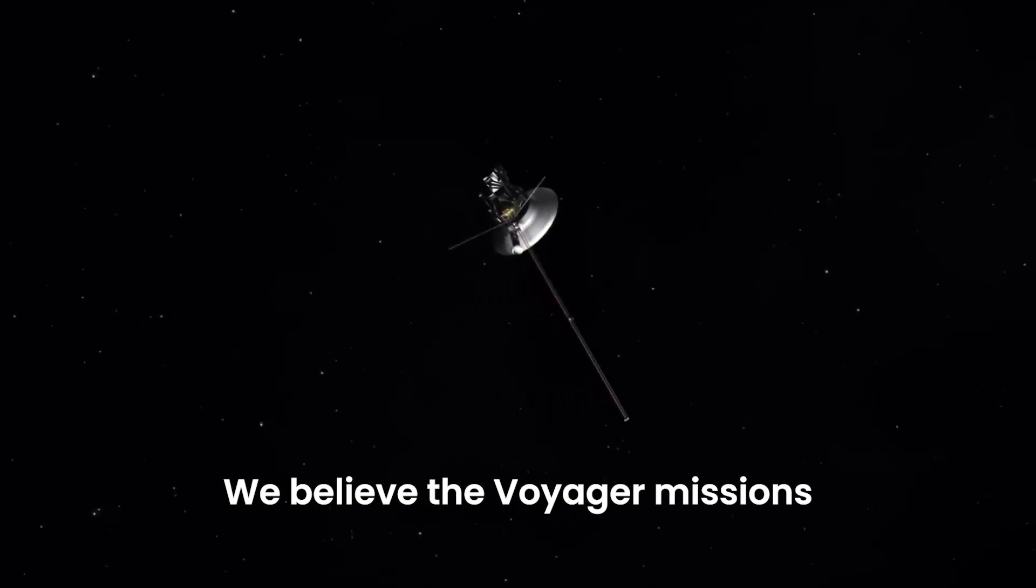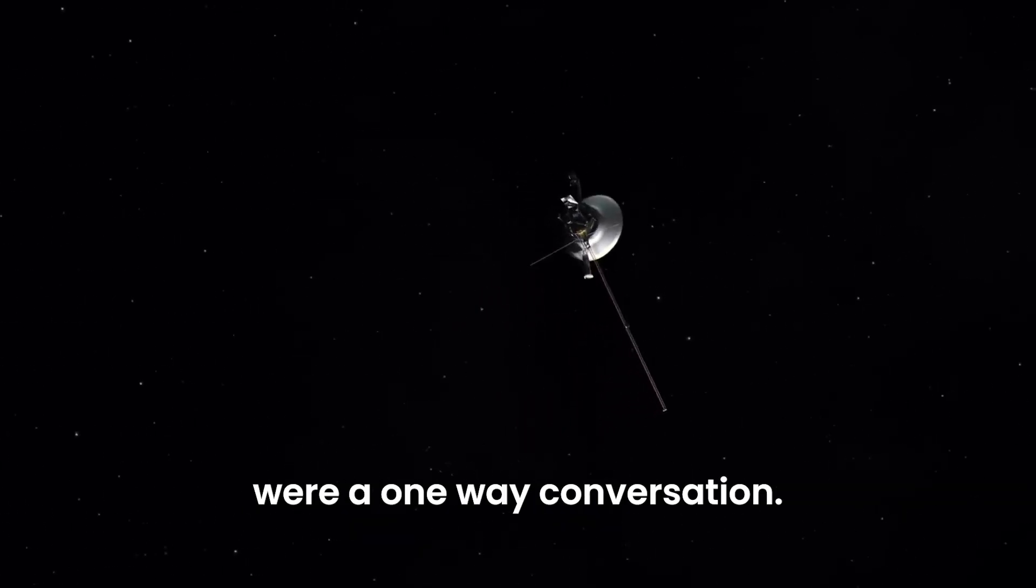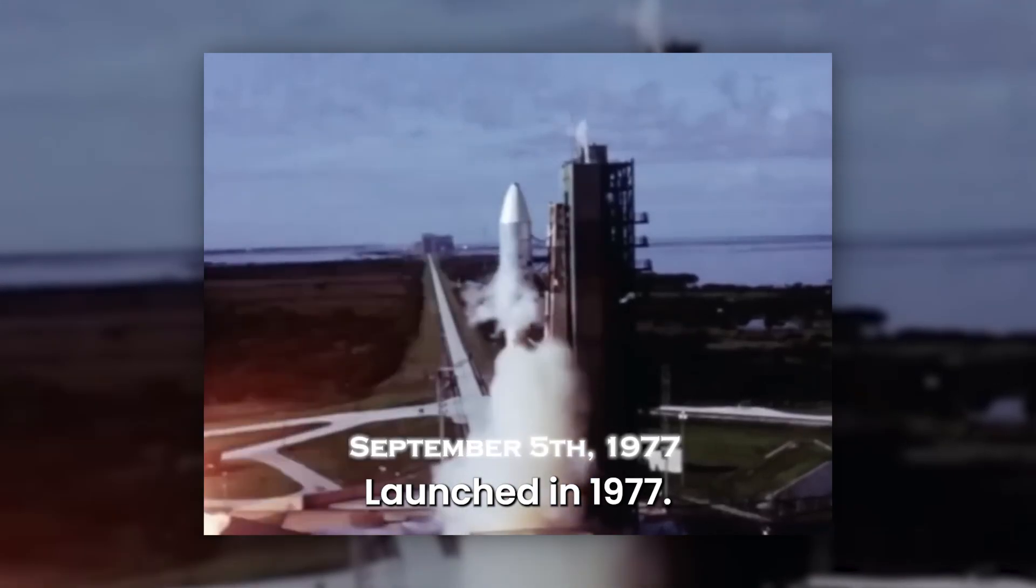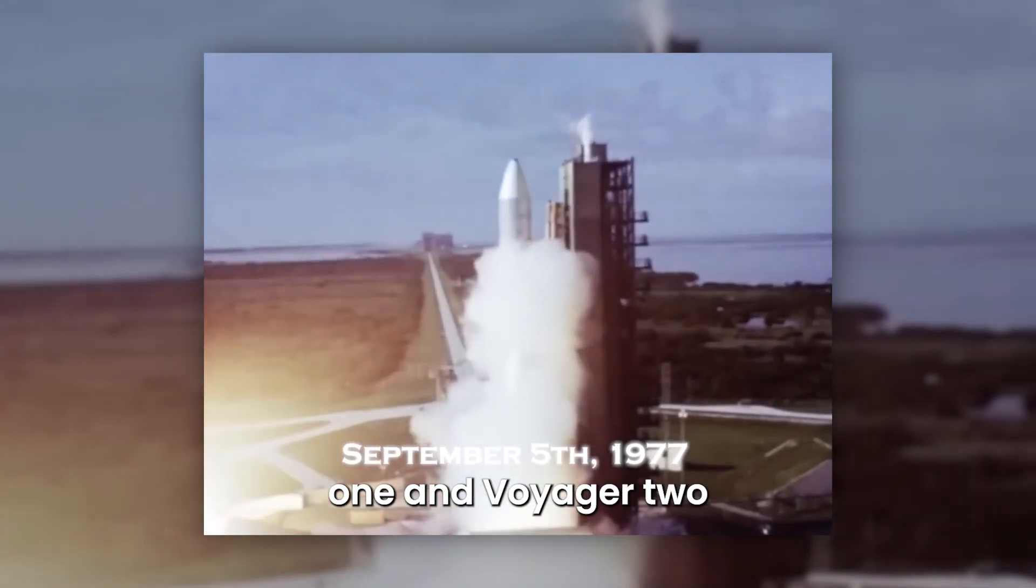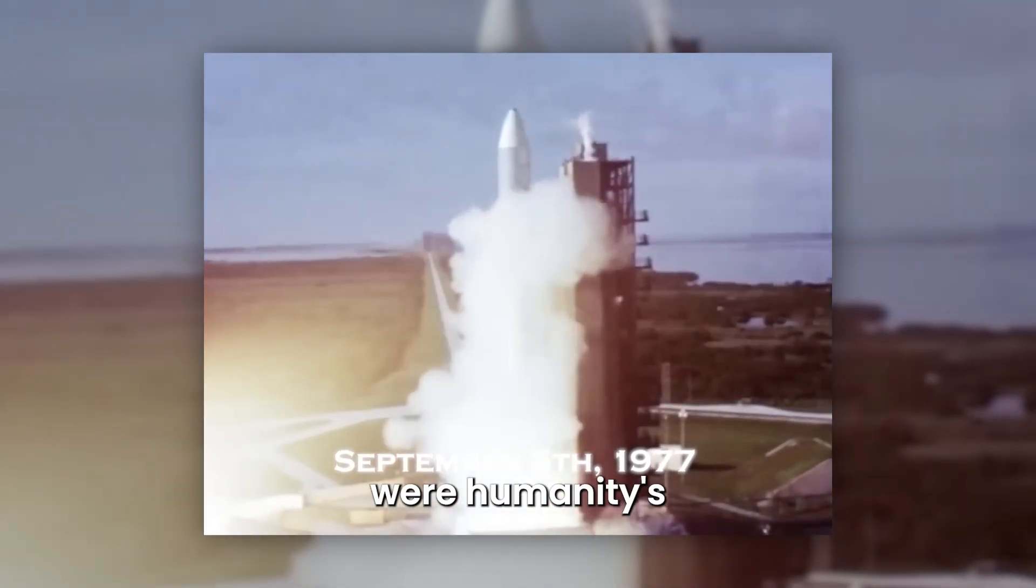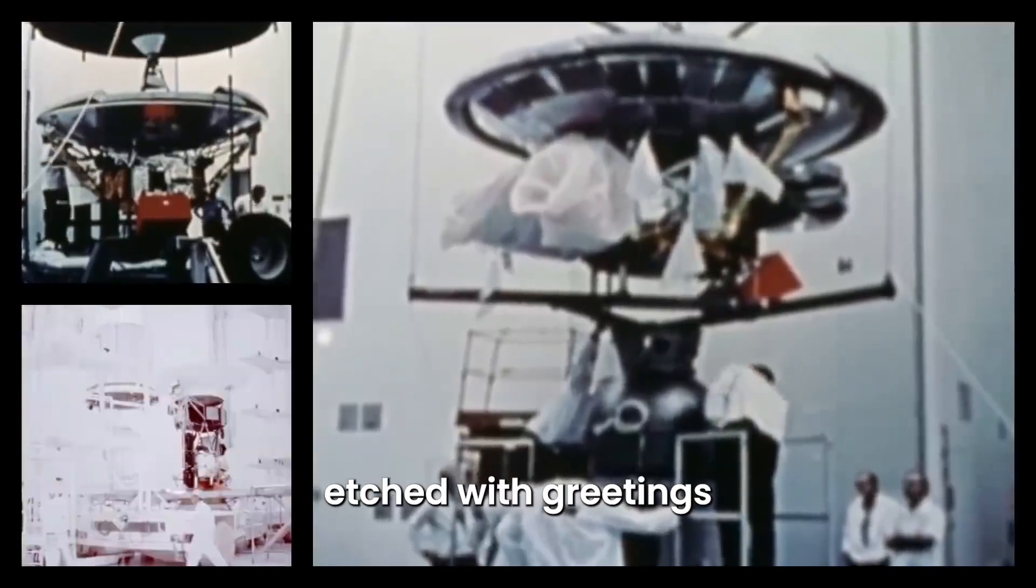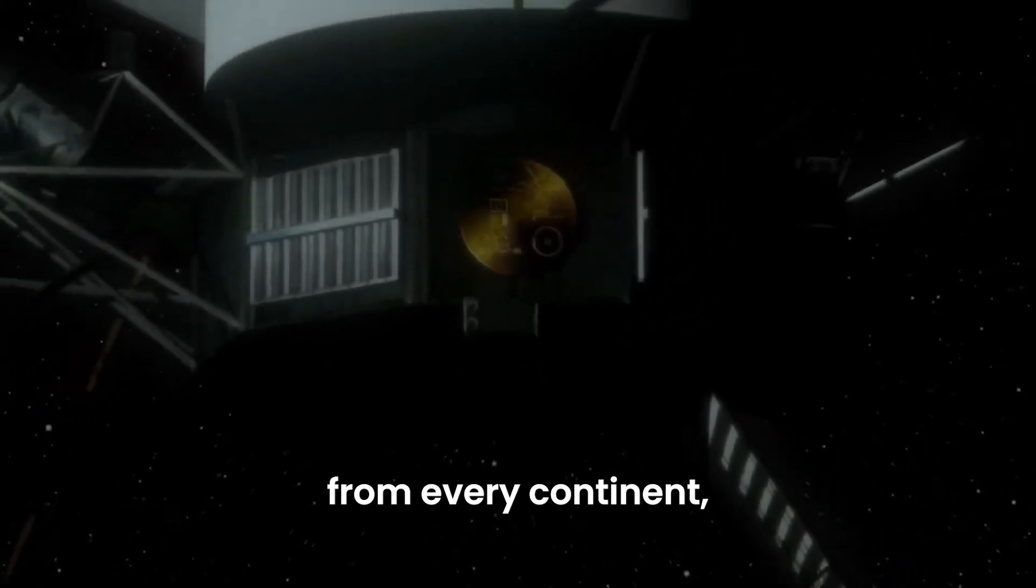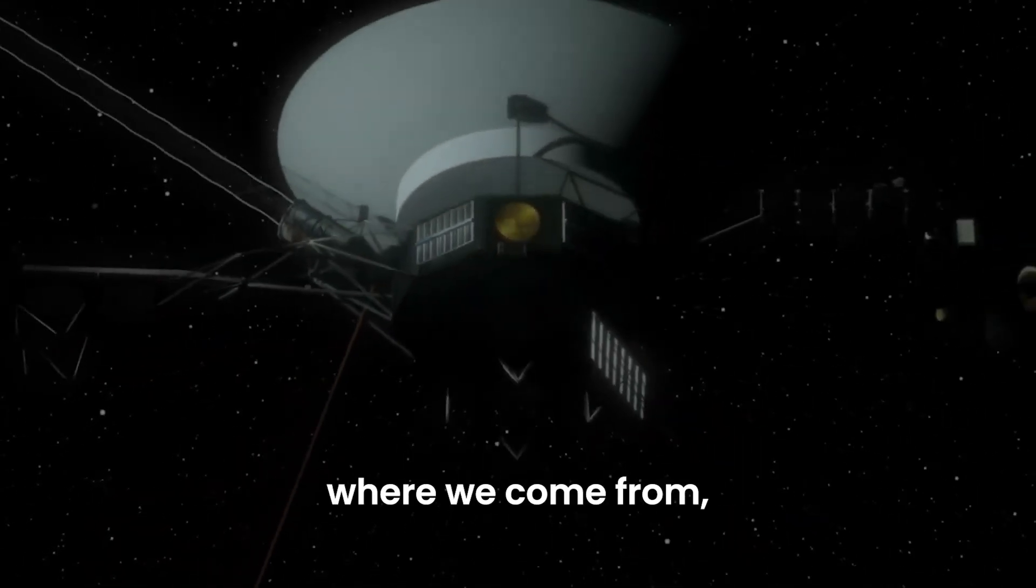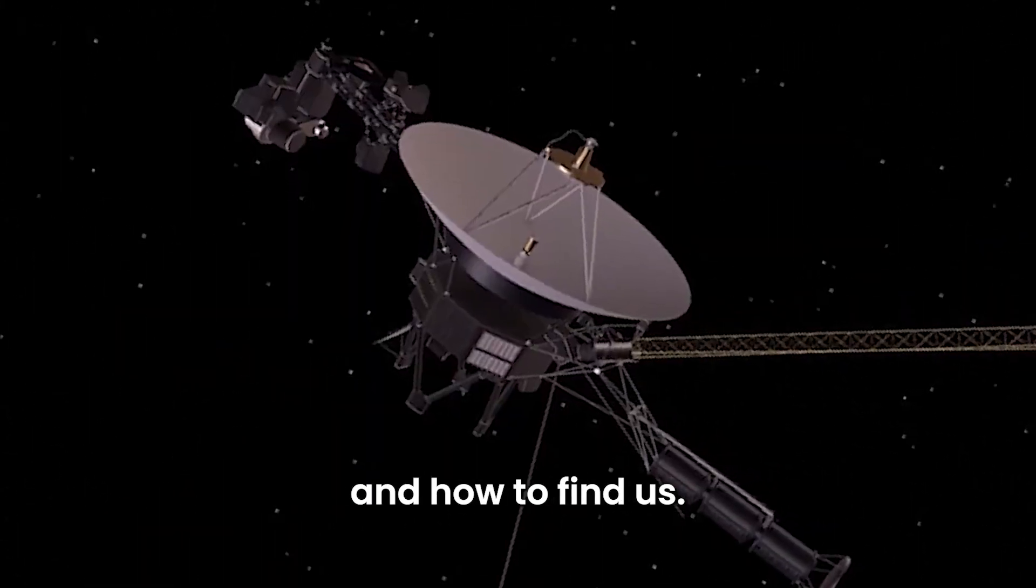For decades, we believed the Voyager missions were a one-way conversation. Launched in 1977, the twin spacecraft Voyager 1 and Voyager 2 were humanity's furthest-reaching emissaries. They carried with them golden records etched with greetings in dozens of languages, music from every continent, and mathematical symbols intended to explain who we are, where we come from, and how to find us.